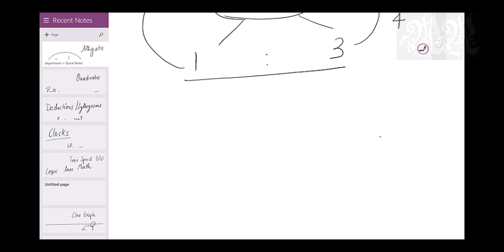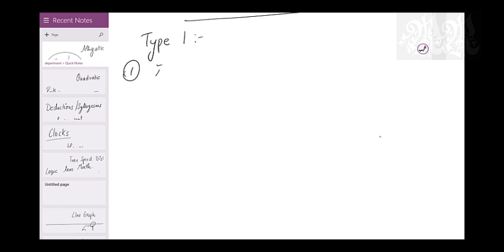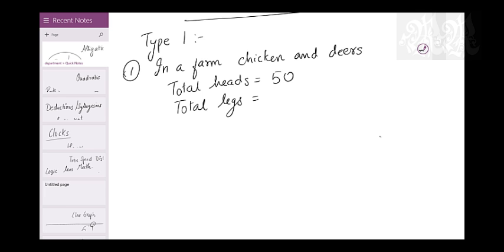Type 1 question. In a farm, there are chicken and deers. It's a nice farm. It gives chicken and deers. Fine. The total number of heads, total heads are 50. And the total legs, the total legs are 170. Find out how many deers and how many chickens are there.